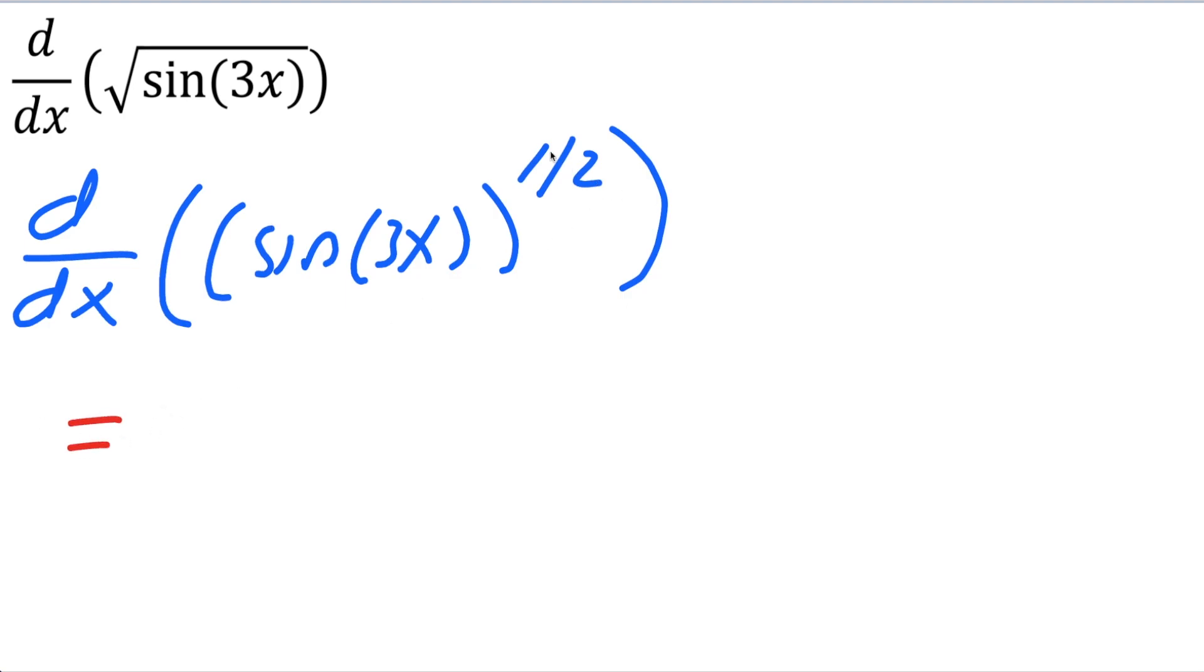So we're going to first bring down the 1 half, so we'll have 1 half, then we copy the inside piece. So sine, parentheses, 3x, close parentheses, close parentheses, the exponent was a 1 half, so now you need to subtract one, so it's going to be negative 1 half.